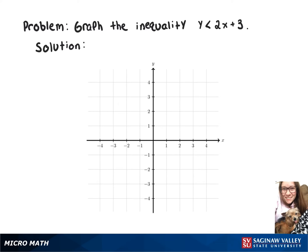So our y-intercept is going to be 3, and then if we go down 2 and to the left 1, we'll get another point.